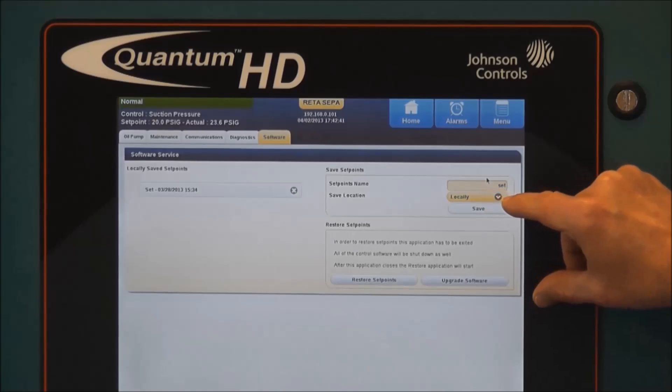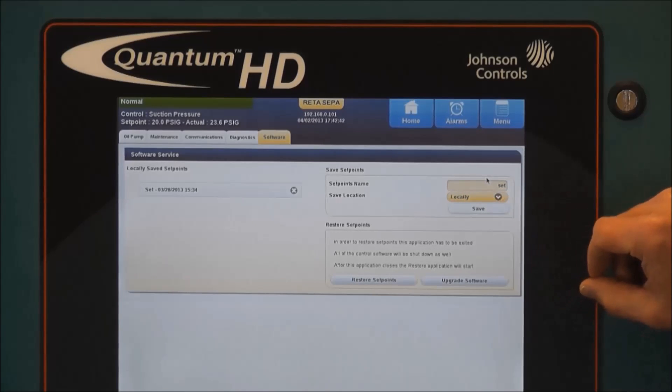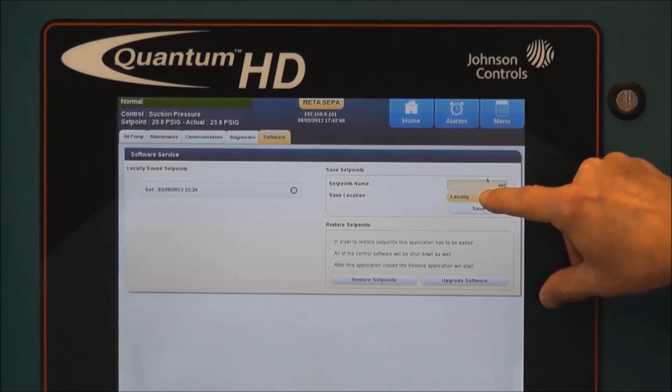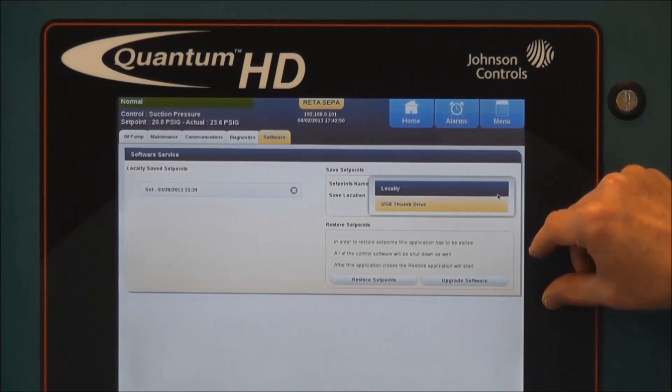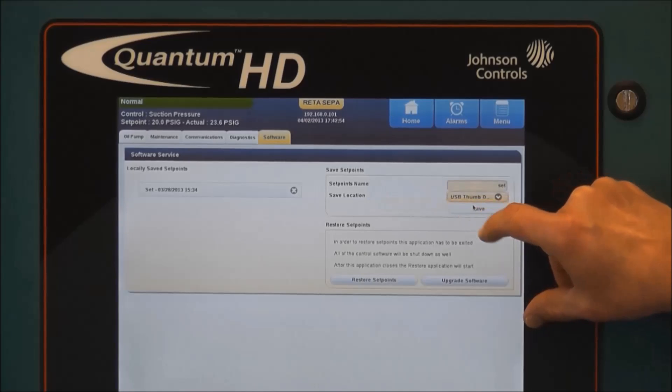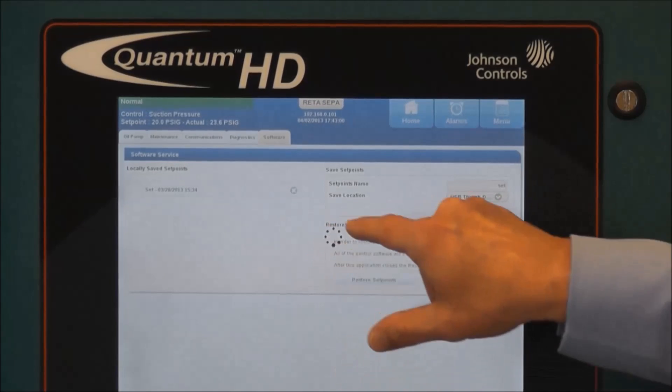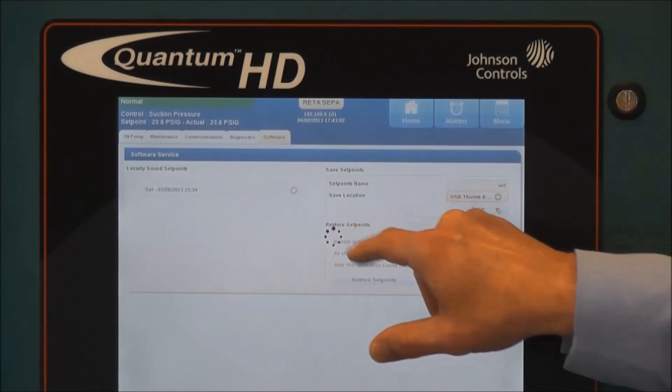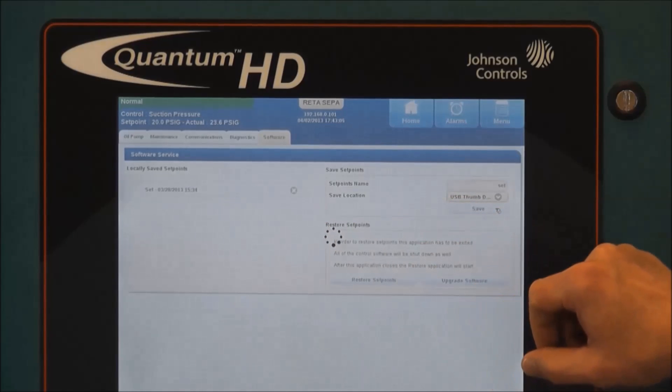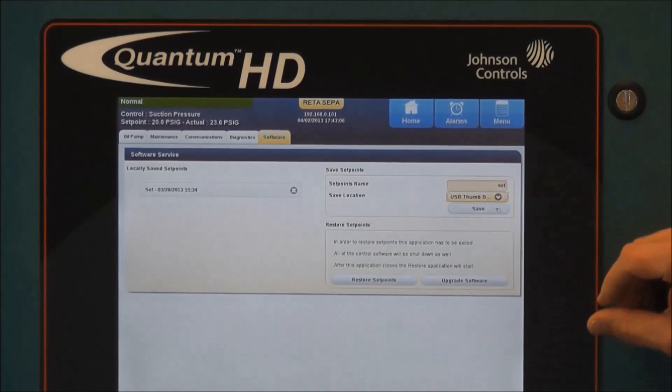The next step will be to determine whether we're going to save locally to the operating software flash card or to a USB thumb drive. To do this, we'll enter in the dropdown and open up a selection box. And for our purposes, we will select USB thumb drive. And the next step will be to simply hit save. And you'll see the saving occur through the rotating dial in the center. Once the screen returns to normal, the process is complete.